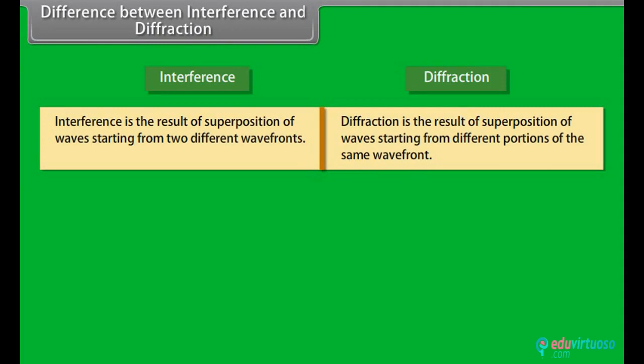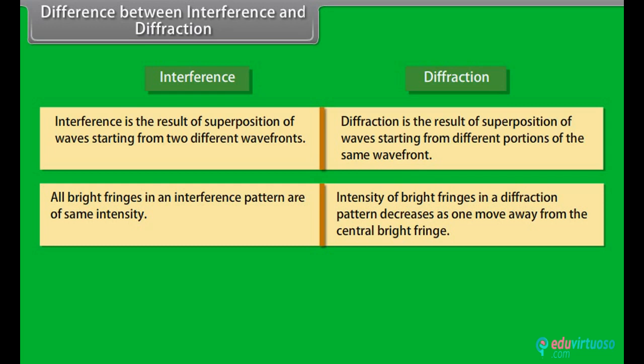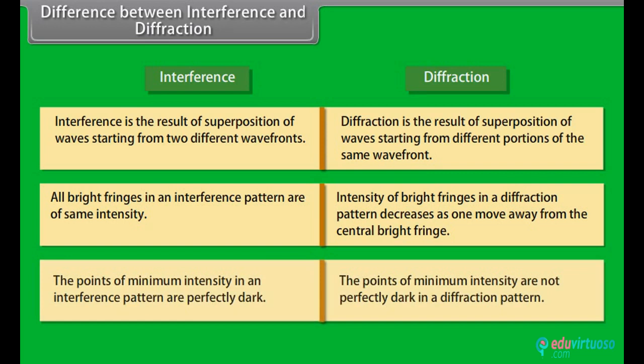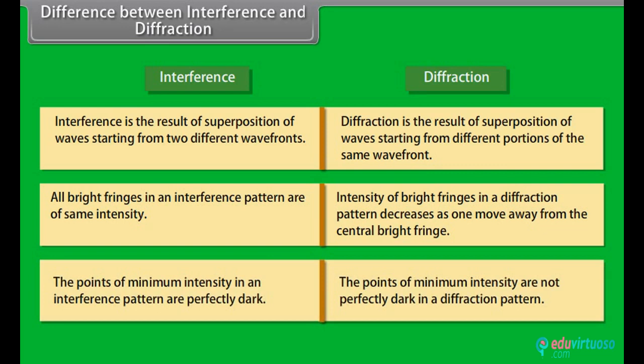Difference between interference and diffraction: Interference is the result of superposition of waves starting from two different wave fronts, whereas diffraction is the result of superposition of waves from different portions of the same wave front. All bright fringes in an interference pattern are of the same intensity, whereas intensity decreases as one moves away from the central bright fringe in a diffraction pattern. Points of minimum intensity in interference are perfectly dark, whereas they are not perfectly dark in diffraction.